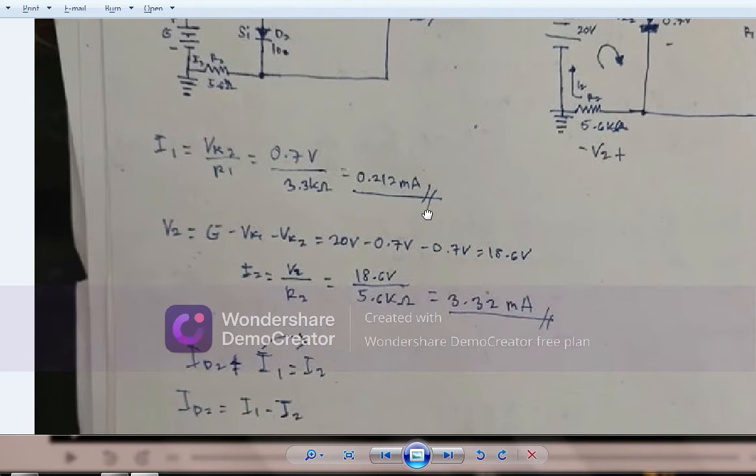In order to find i2, we need to use KVL. The formula is V2 equals E minus the voltage across the diode, which is Vk1, minus Vk2.